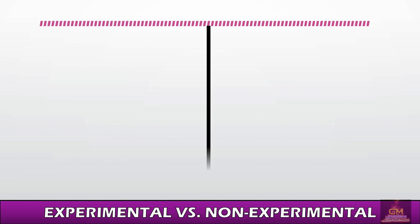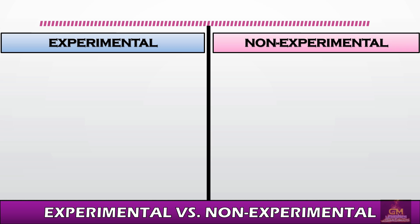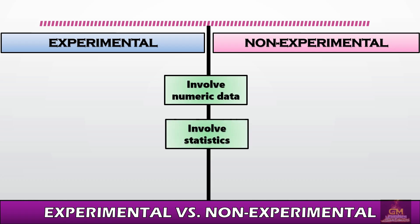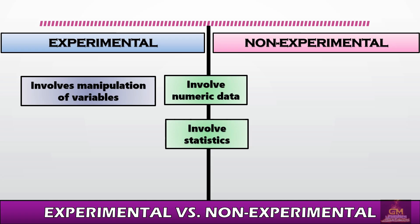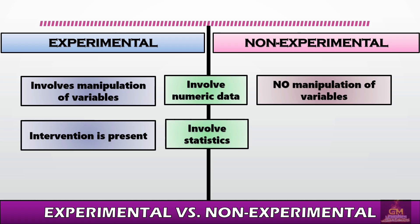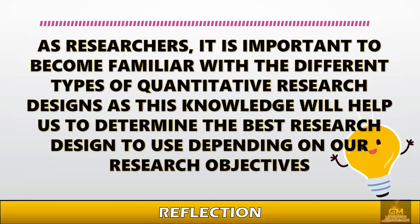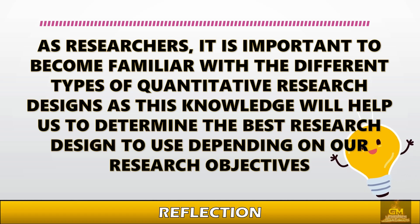Finally, let's discuss the similarities and differences between experimental and non-experimental research designs. Both involve numeric data and statistics. In experimental research, there is manipulation of variables and intervention is present, while in non-experimental research, there is no manipulation of variables and no intervention. In conclusion, as researchers, it is important to become familiar with the different types of quantitative research designs, as this knowledge helps determine the best research design to use depending on our research objectives.